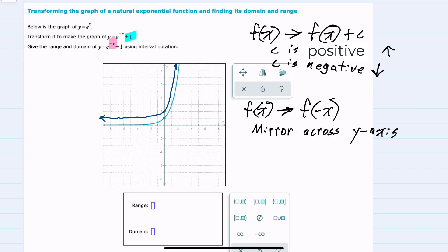So taking the blue graph, where we have shifted up 1 unit, and then mirroring across the y-axis, would give us this sort of shape. We've shifted up 1, and then mirrored across the y-axis.